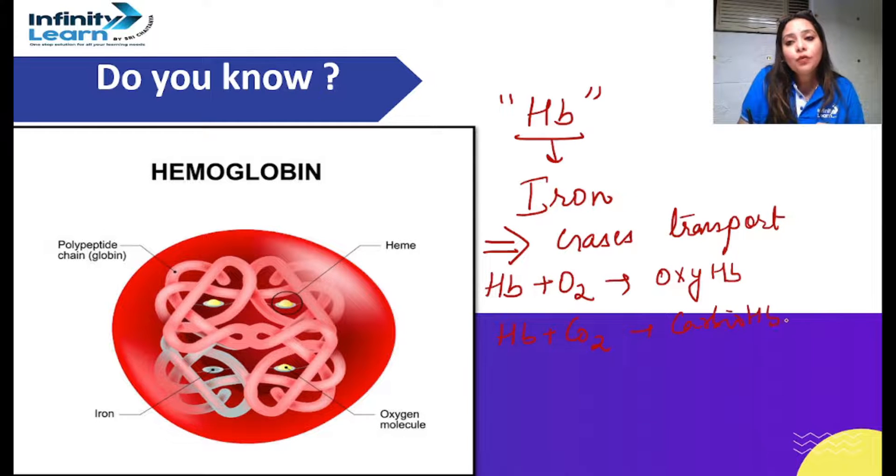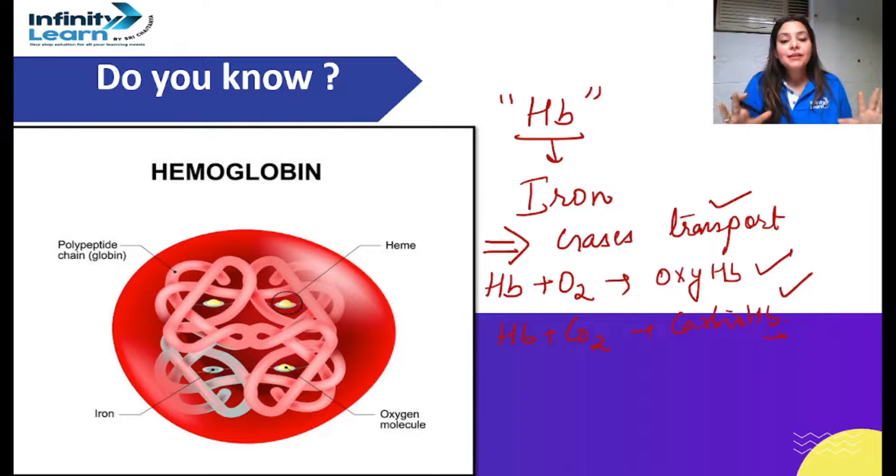And in the form of this complex, it is transported to different body parts. So if someone asks you what is the function of hemoglobin, you should be quick with the answer: gases transportation. How? By forming complexes. Like it forms oxyhemoglobin when it combines with oxygen, carbenohemoglobin when it combines with carbon dioxide. And if in case we inhale carbon monoxide, then it forms complex with it also, carboxy hemoglobin, which is a defective complex which causes suffocation, breathing problems, and even that gas can be fatal to you. It can lead to your death.